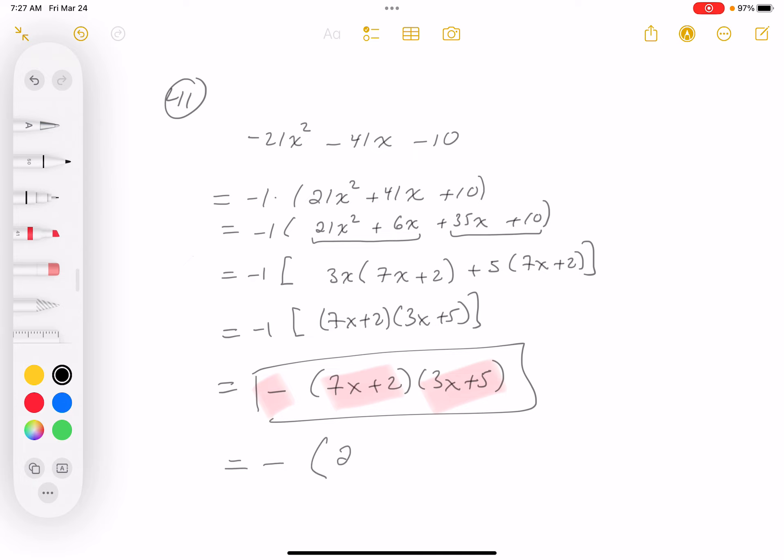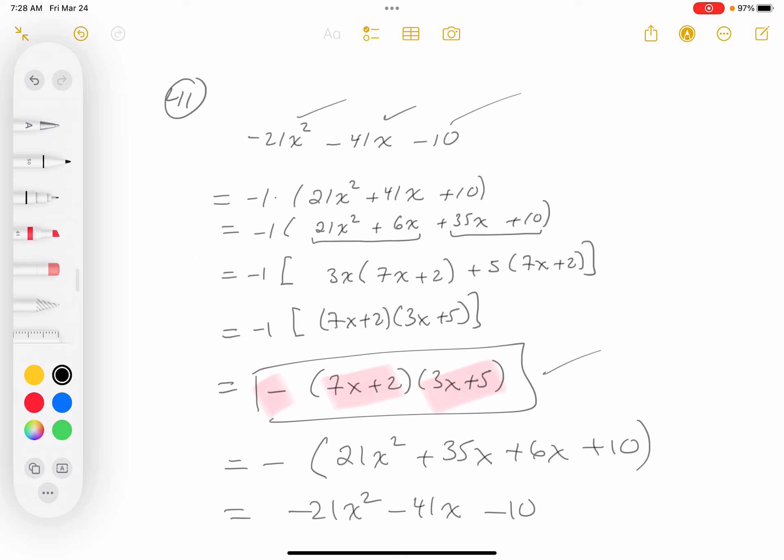7x times 3x, 21x squared. Then you get 35x. Then you get 6x, and you get 10. And if you did that, you get minus 21x squared. This is a check. 35 and 6 is 41, so I get minus 41x, and I get minus 10. Do we get back what we started with? Then we do, and that's what's the important thing, is the factorizations are going to give us back what we expected. Thank you.